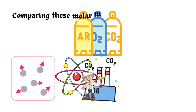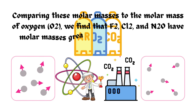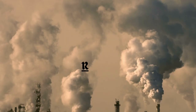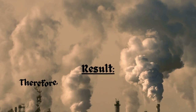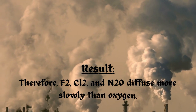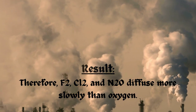Comparing these molar masses to the molar mass of oxygen, O2, we find that F2, Cl2, and N2O have molar masses greater than that of O2, so they would diffuse more slowly than oxygen. Result: Therefore, F2, Cl2, and N2O diffuse more slowly than oxygen.